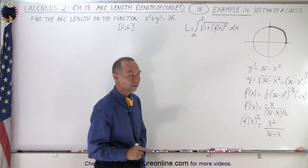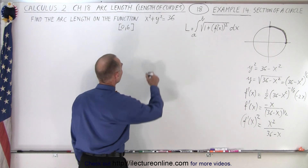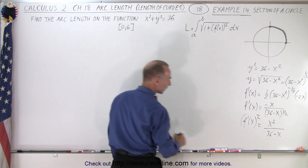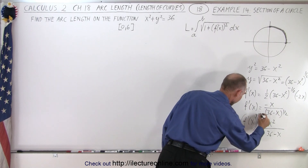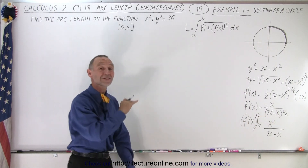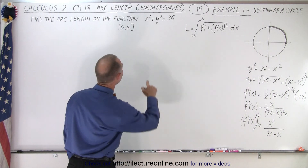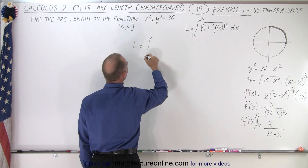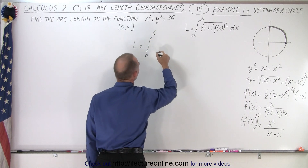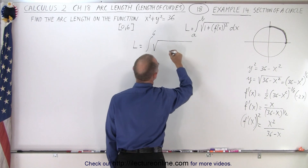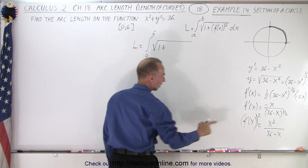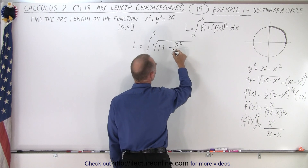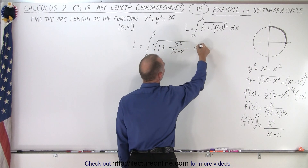Arc length equals the integral from 0 to 6 of the square root of 1 plus x squared divided by 36 minus x squared, dx.